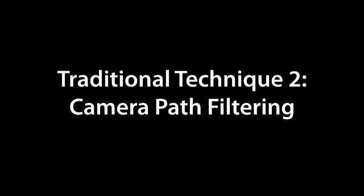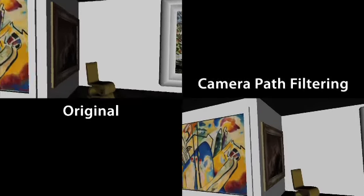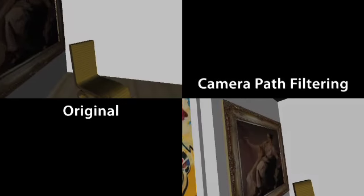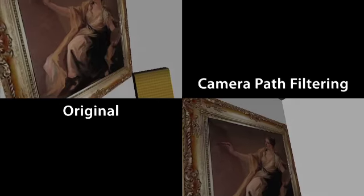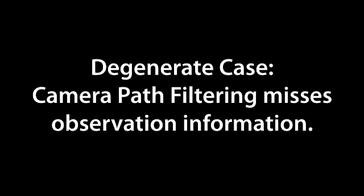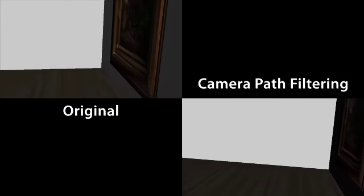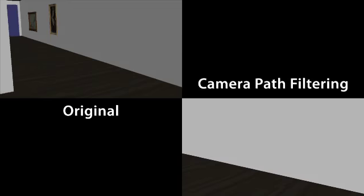Camera path filtering techniques can remove high frequency jitter for more natural movement. The degenerate case here is the loss of observation information. In this example, it's no longer clear that the viewer glanced at the painting on the wall.